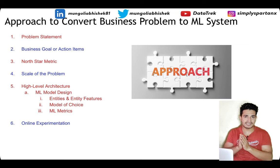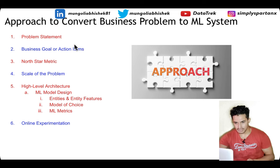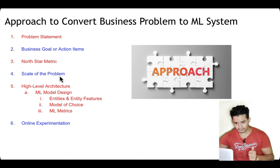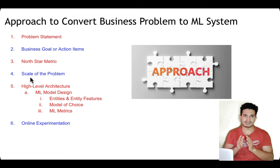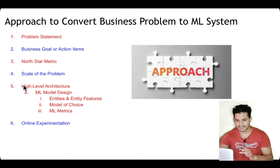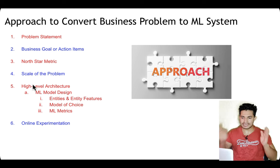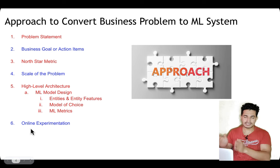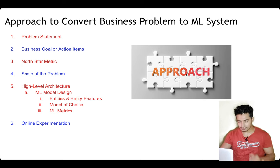To transform this business problem into an ML system design problem, we will follow a structured approach: first, have a clear understanding of the problem statement and business goals; determine the north star metric; understand the scale of the problem so we know what ML approach and architecture to use; identify the ML models, entities, and entity features within the architecture; choose the ML metrics for comparing models; and finally take it to an online experimentation stage. If results are statistically significant, we can scale it as a platform feature.